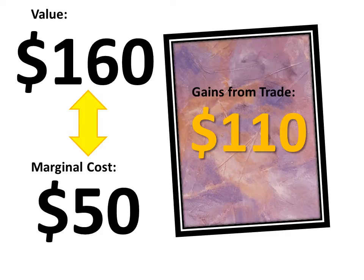And we can think about, in total, what's happened here. The consumer valued this product at $160, the artist produced it for a cost of $50, and the difference between the value that was created from this painting and the cost of creating it is, in this case, $110. So we call that gains from trade.